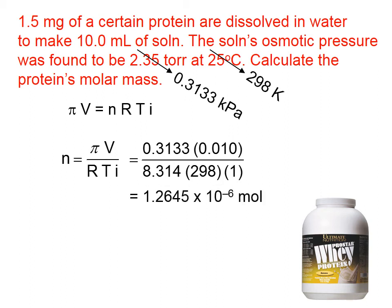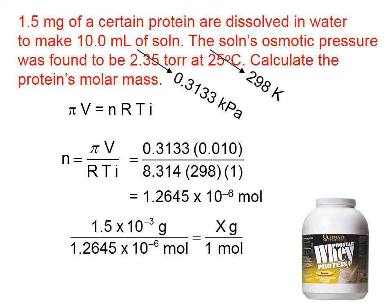Now the question is, what's the protein's molar mass? And of course what that means is, we want the mass of one mole of protein. We have the mass of 1.2645 times 10 to the negative sixth moles of protein. So, if we set up a ratio, we should be able to find the mass of one mole.